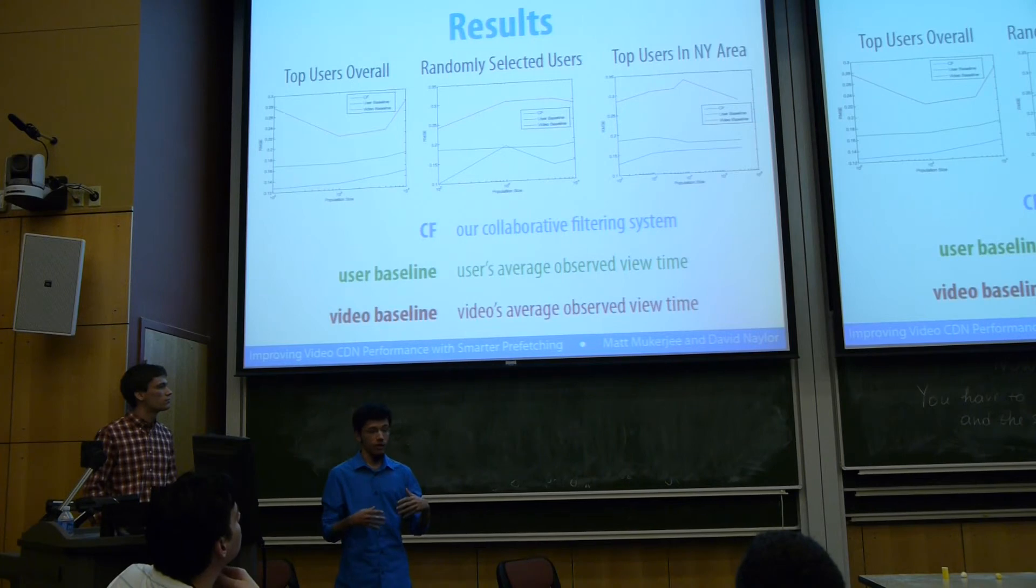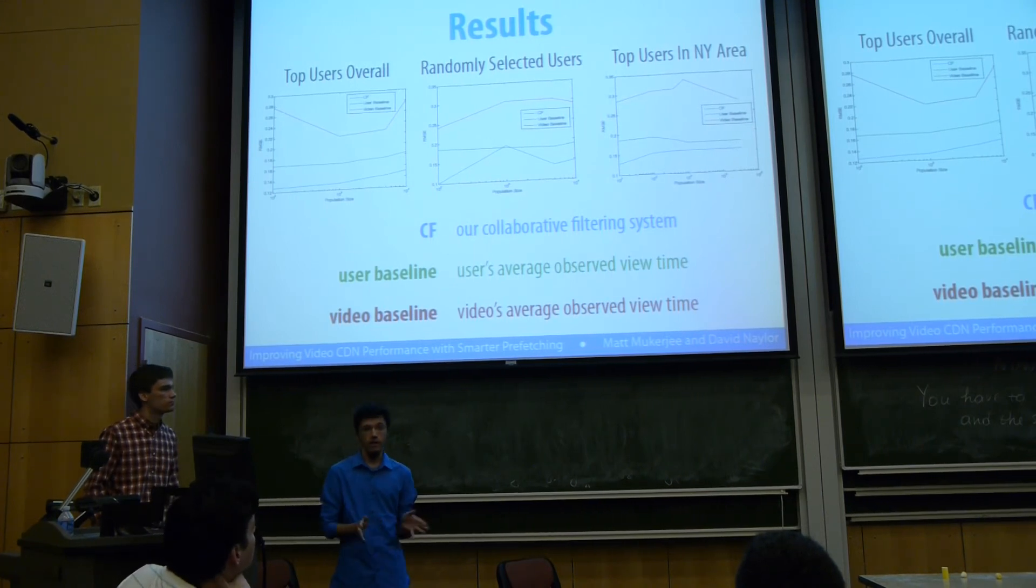This really implies that we can get better performance by predicting using this system to predict our cache, how much to prefetch for a cache. Are there any questions?